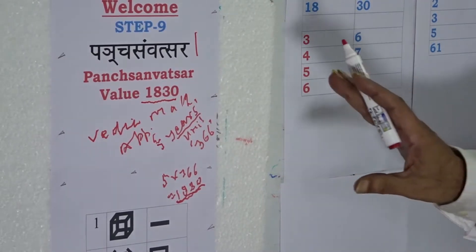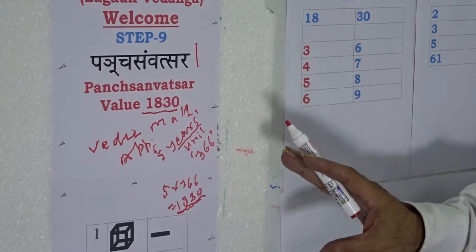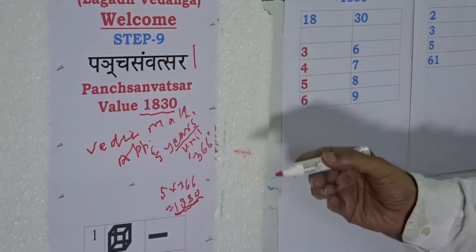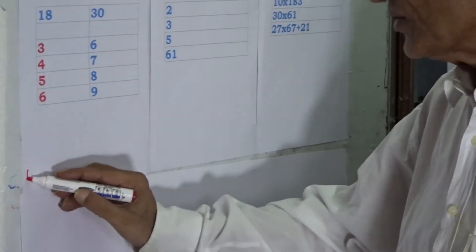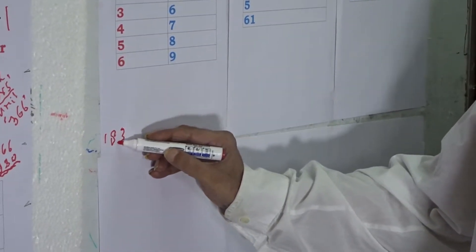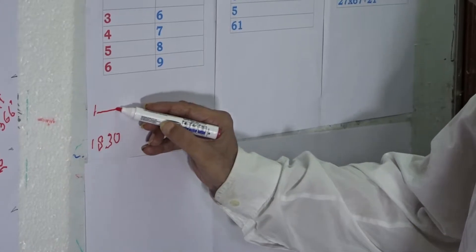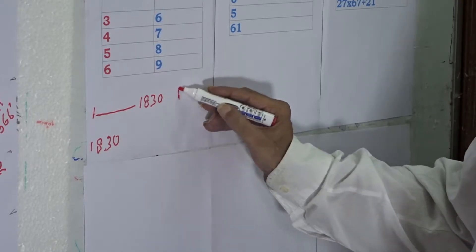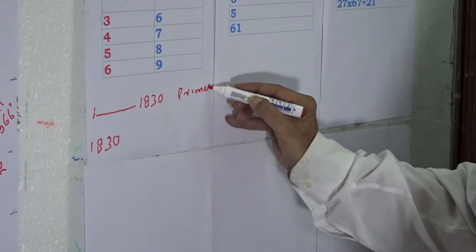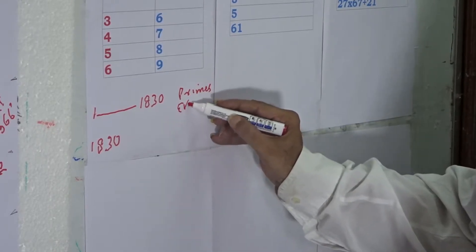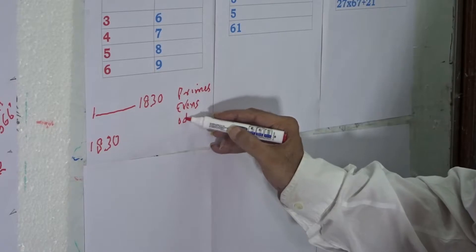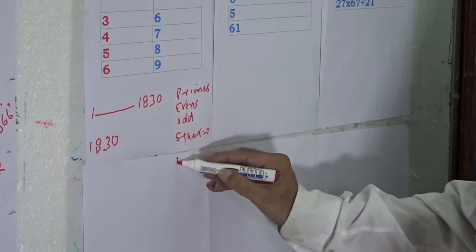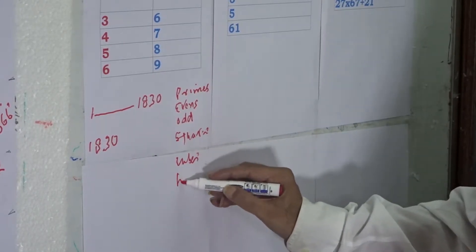This value 1830 is being worked for its different inherent features across the range of values starting from 1 and reaching up to 1830. How many are the primes? How many are the evens? How many are the odds? How many are the squares? How many are the cubes? And higher powers.